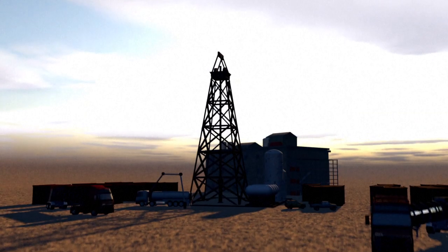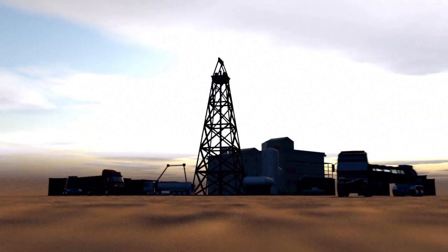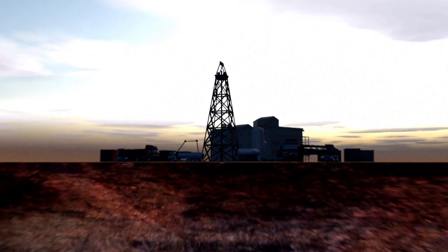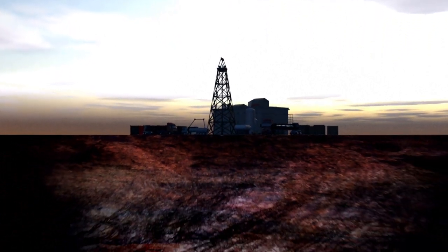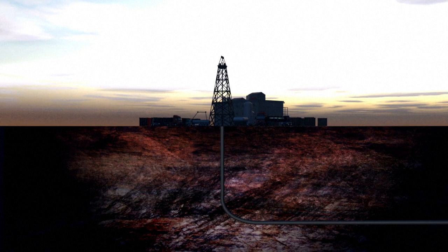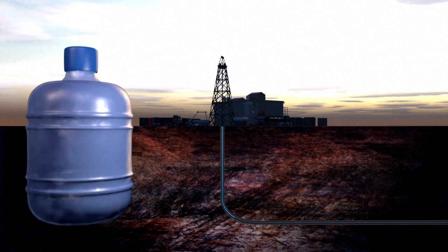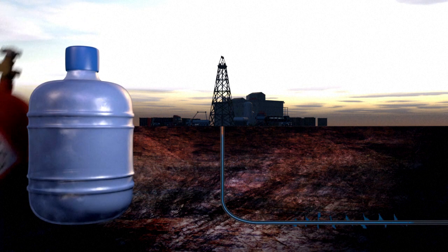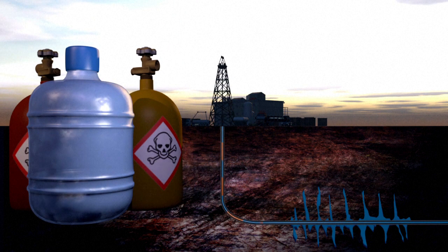The most common way to extract shale gas involves a method known as hydraulic fracturing or fracking. A rig drills down to the shale deposit, then continues horizontally. Huge quantities of water and chemicals are injected into the hole to release the gas, making this process particularly controversial.